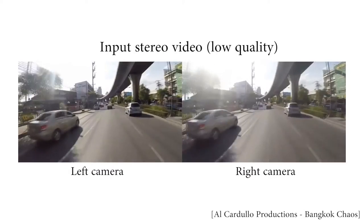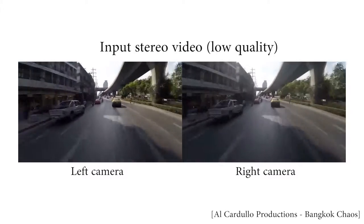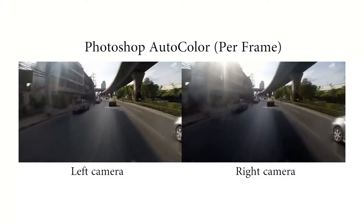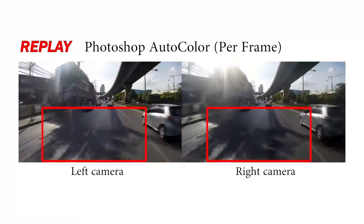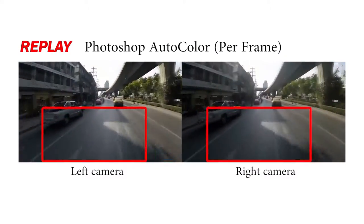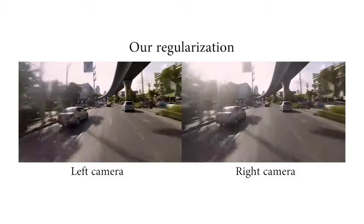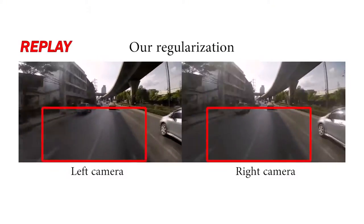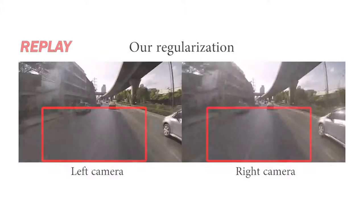More common automatic color adjustment filters can have a strong effect in video scenes even when pixel differences due to dynamic motion and view change seem small. Our technique is able to correct for these inconsistencies to produce a more uniform appearance across views and time.